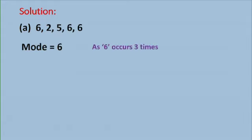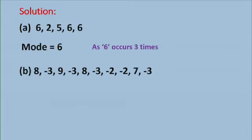Part B, to find the mode of 8, -3, 9, -3, 8, -3, -2, -2, 7, and -3. So which number can you see most often in this set of data? Yes, the mode is -3. It occurs four times. 8 is occurring only two times, -2 two times, whereas -3 occurs four times. So this is the mode.